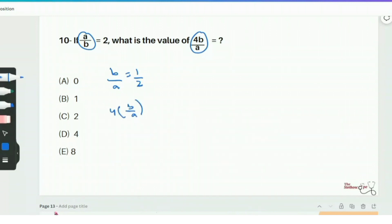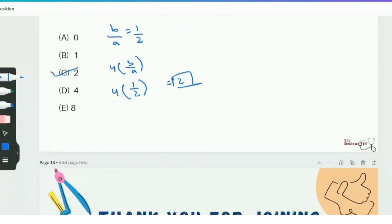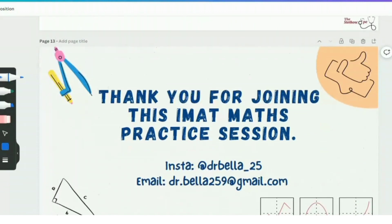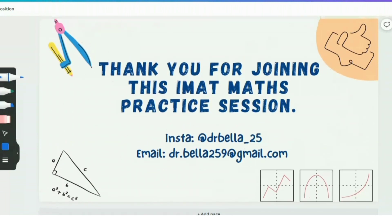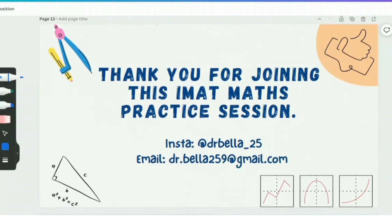And I know that b over a equals 1 over 2. So I can rewrite this as 4 times 1 over 2, which is 2. And the correct answer option is option C for this question. And that's a wrap up for today's video on 10 easy maths questions for the IMAT preparation. Good luck with your IMAT exam and thanks for watching.